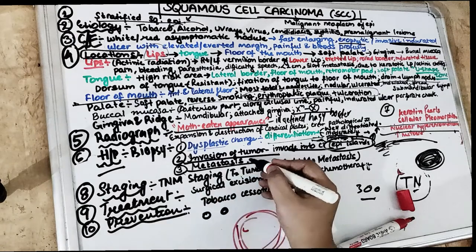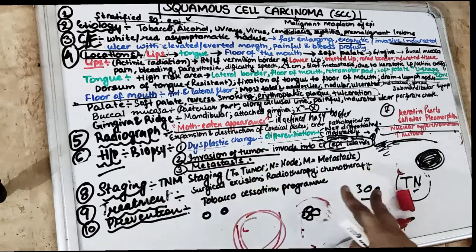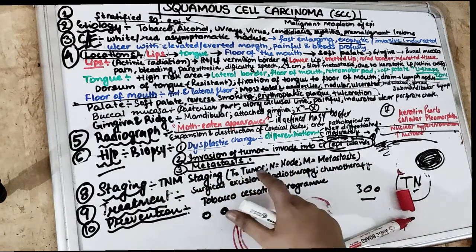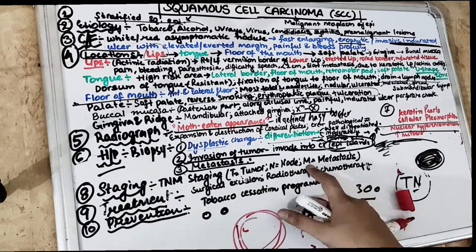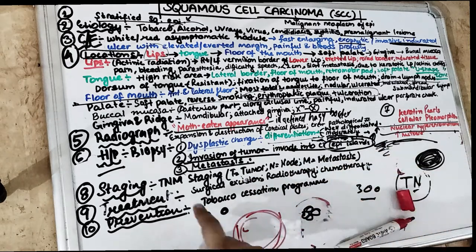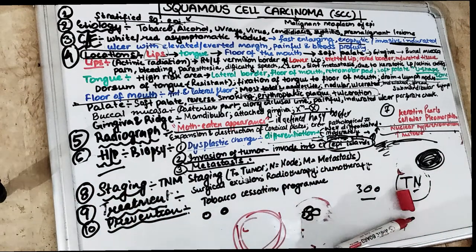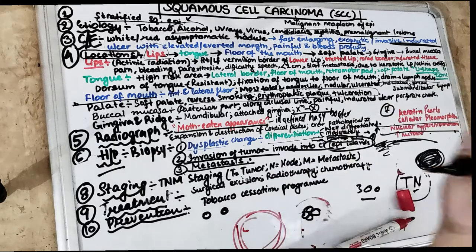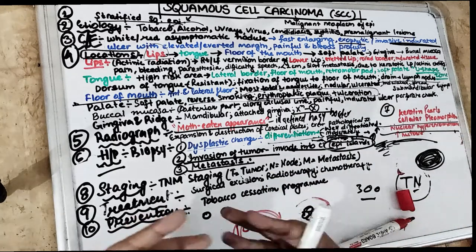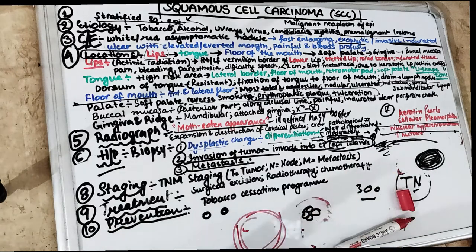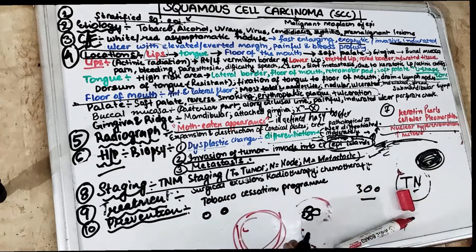The cancer metastasizes and invades into other tissues. We will study the TNM staging in a separate video — TNM staging means T for tumor and the size of the tumor, N for lymph node, and M for metastasis.